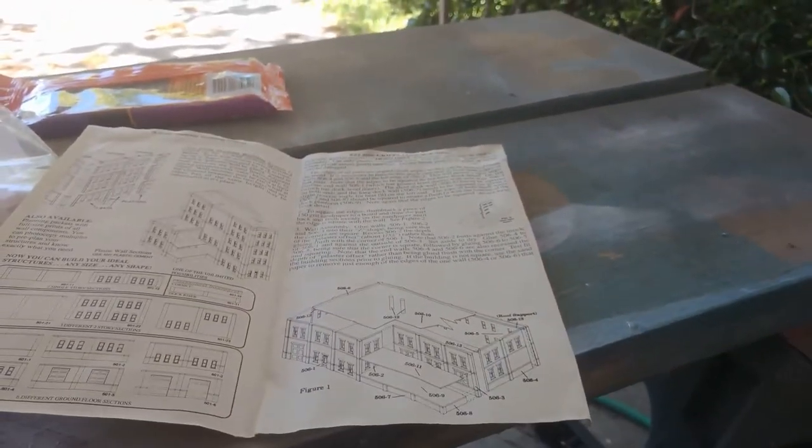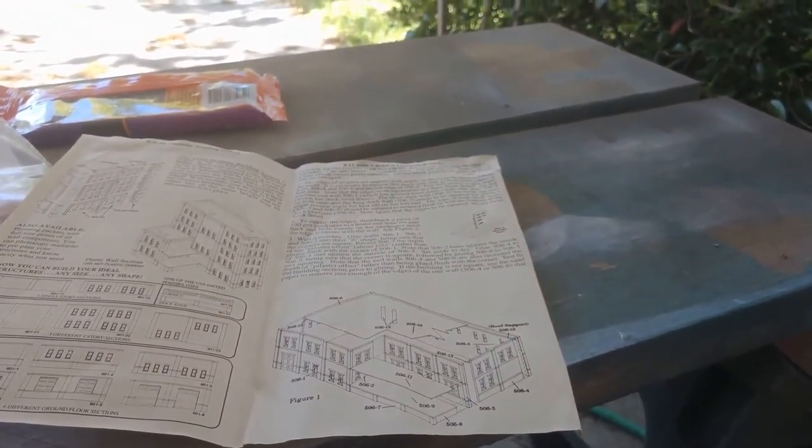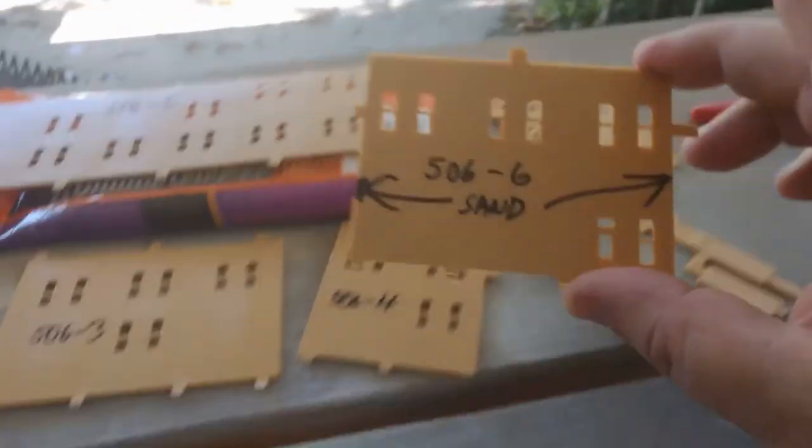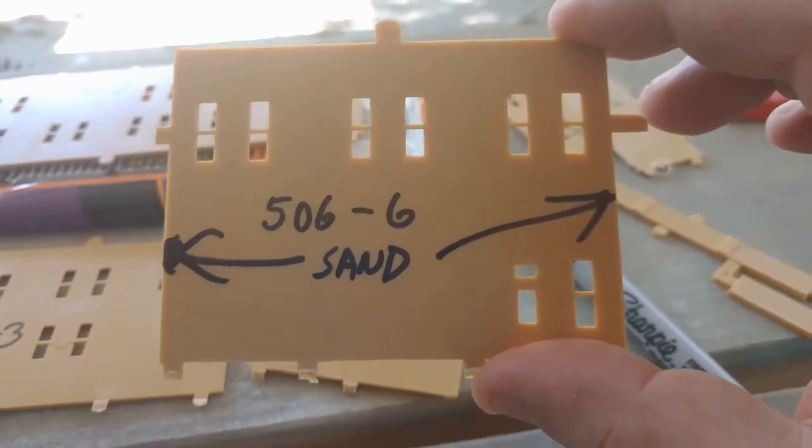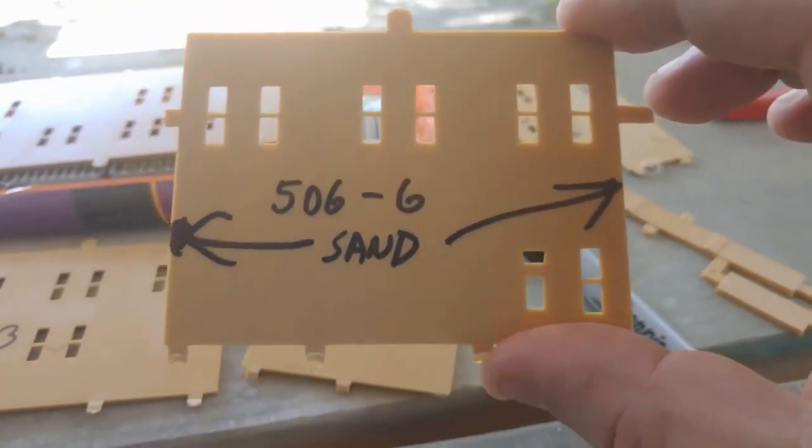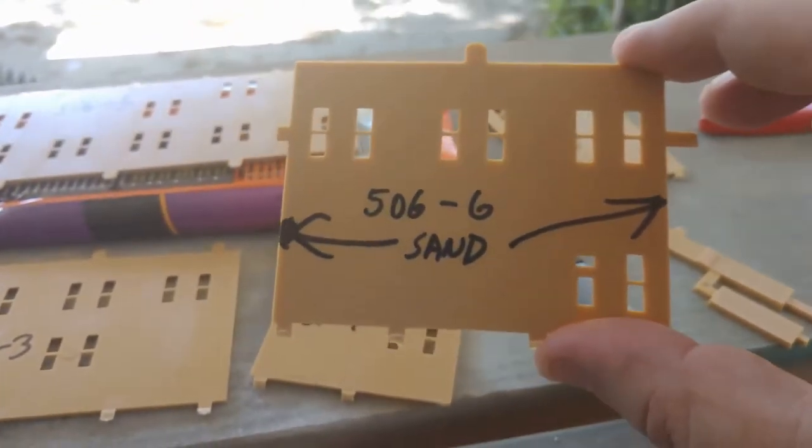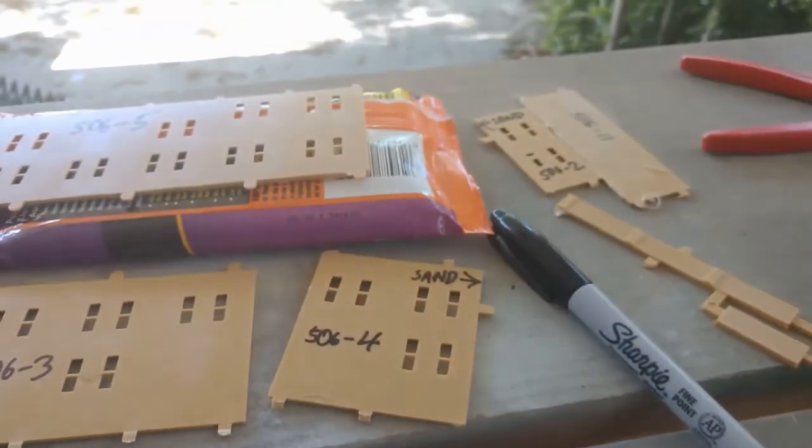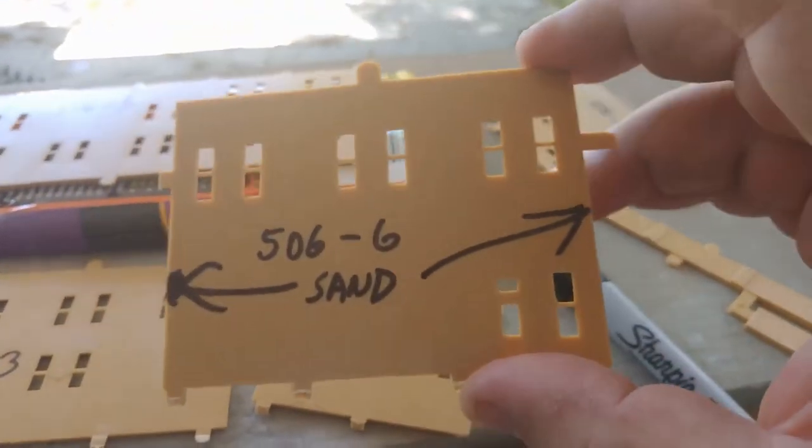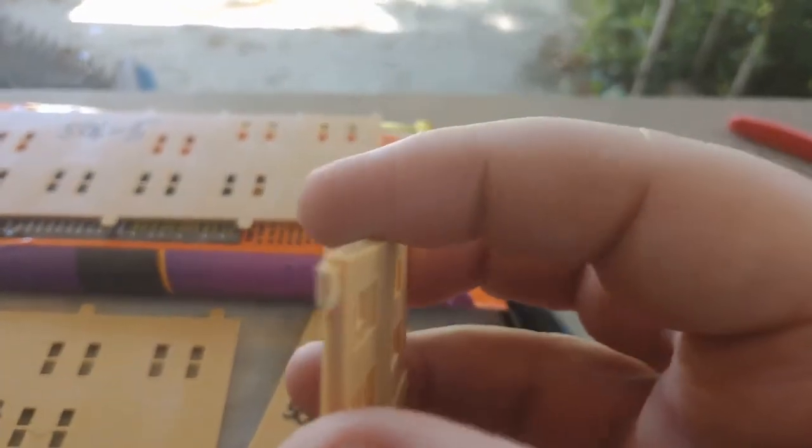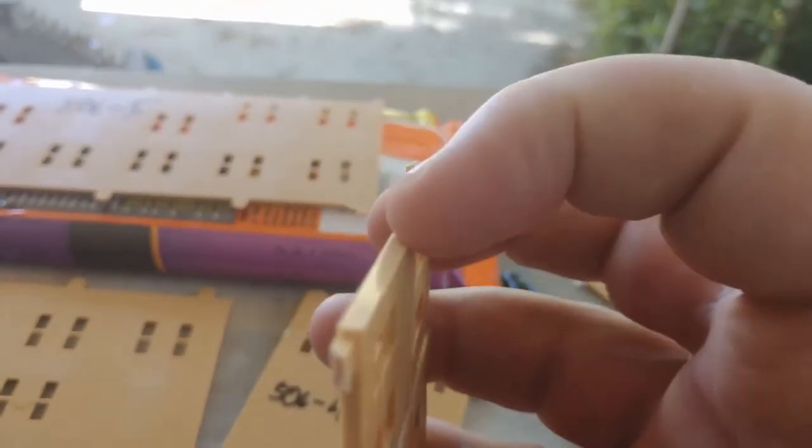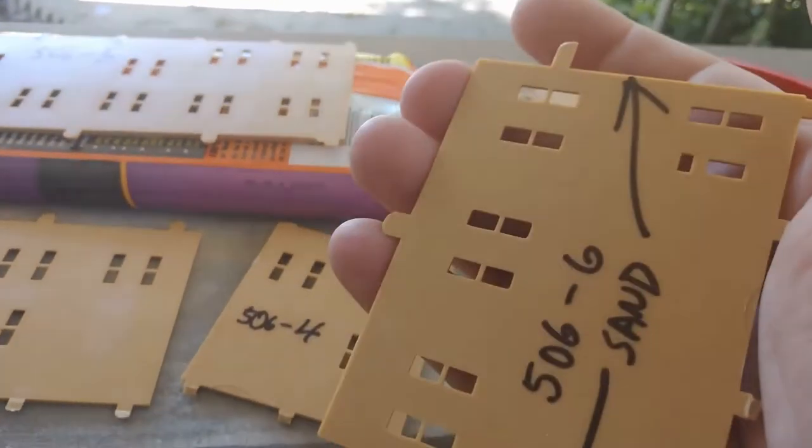I'm gonna go on and number the pieces and come back. Here's some of the pieces I wrote on the back with a sharpie the piece numbers that were listed in the instructions. It did say in the instructions which ones had this beveled end. Those are the ones I wrote 'sand' on.